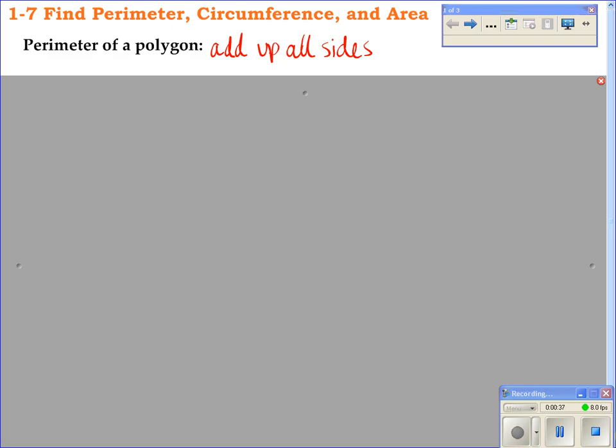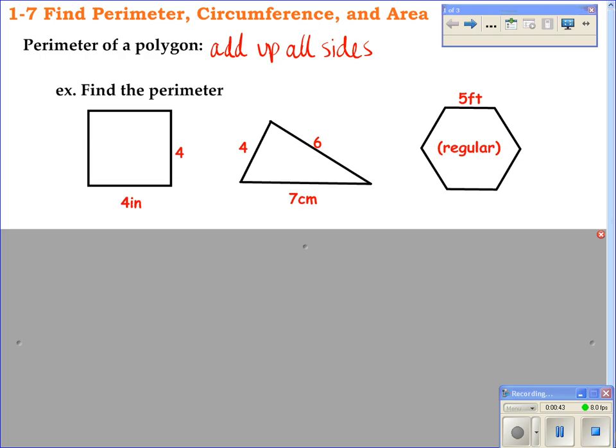So you're just going to add up the sides of any polygon. I'm going to give you three very easy examples. You can get a sketch of each picture.